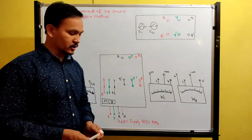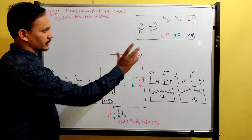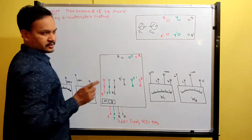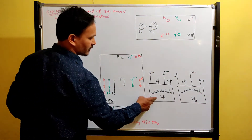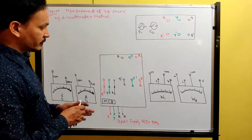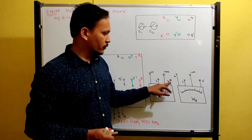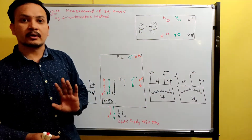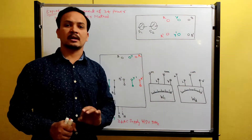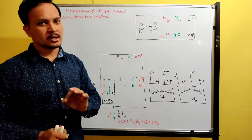Before doing the experiment, you have to find the wattmeter constants — what is the constant for W1 and W2. In the wattmeter, the voltage terminal has 3 voltage ranges: 150 volt, 300 volt, and 600 volt. You can select any voltage — that is your choice.